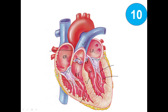The pulmonary trunk is divided into the left and the right. We got here the aorta, which is having its three branches — left subclavian, left common carotid, and brachiocephalic. We got here the superior vena cava, inferior vena cava, and we got here the left and right pulmonary veins. Thank you very much.